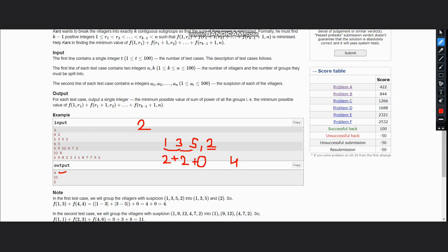Now suppose we take the next case which is 1, 9, 12, 4, 7, 2. We can divide it into 3 groups. The 3 groups here would be: suppose we take 1 in the first group, then 9, 12 in the second group, and 4, 7, 2 in the next group.